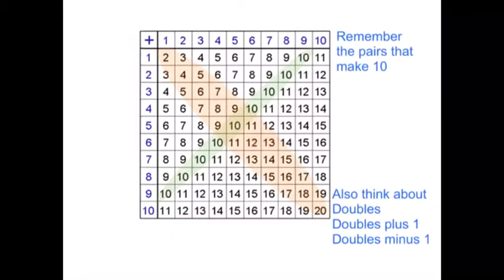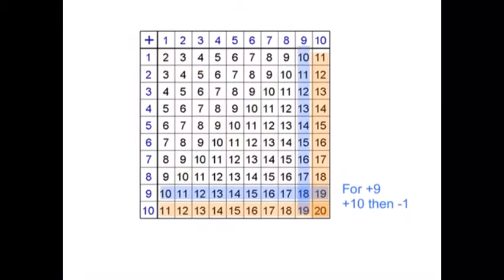For plus 9, we can just add 10 and then take one off. 6 plus 9: 16, take away 1 is 15. 9 plus 3: 10 plus 3 is 13, take away 1 is 12.